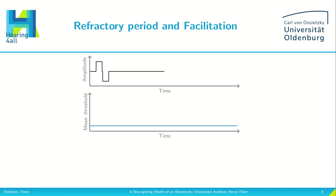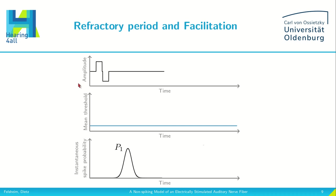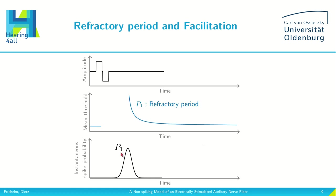Let me explain how we solve this using an example. We have the mean threshold over time, which is at the beginning just a constant value. Then we present a biphasic pulse to our model, and as an output we get the instantaneous spike probability over time — here just a single Gaussian distribution — and also the total spiking probability. With the probability of spiking p1, we would like to increase the threshold to account for the refractory period. So we create one path in our model which increases the threshold with probability p1, and a second path which occurs with probability 1 minus p1, where the threshold is decreased to account for facilitation.